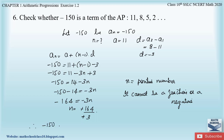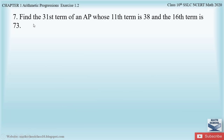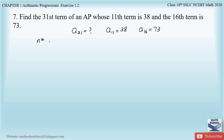Question 7 of Exercise 1.2 says: find the 31st term of an AP whose 11th term is 38 and 16th term is 73. We have to find a₃₁. Given: a₁₁ = 38 and a₁₆ = 73. Let us write down the formula for the nth term of an AP: aₙ = a + (n - 1) × d.